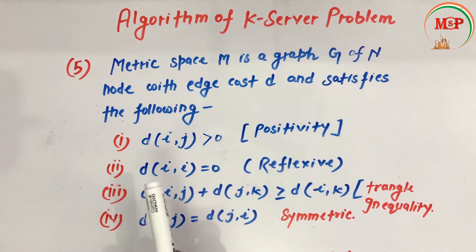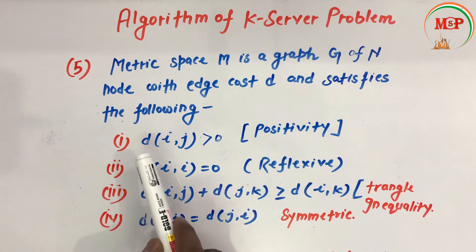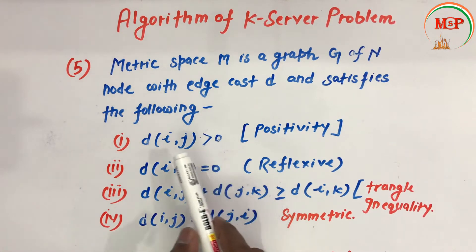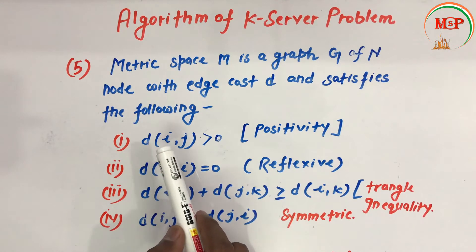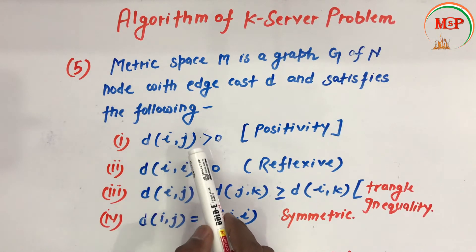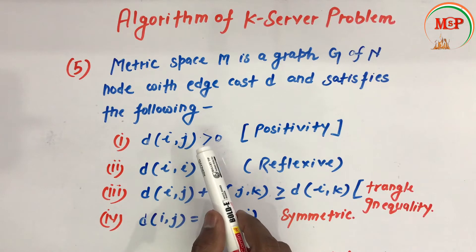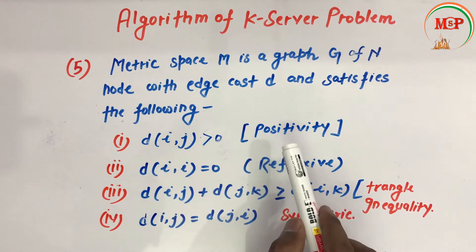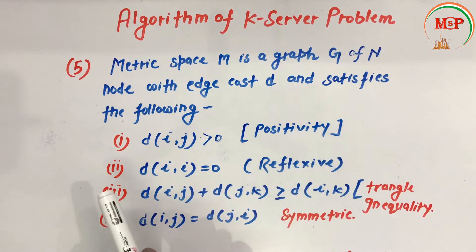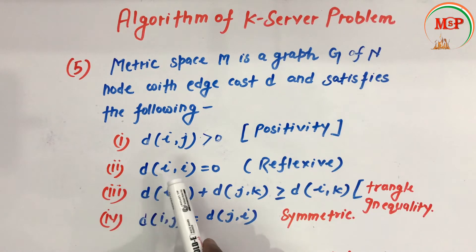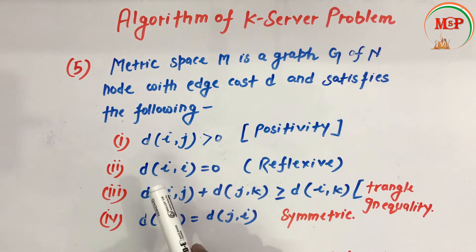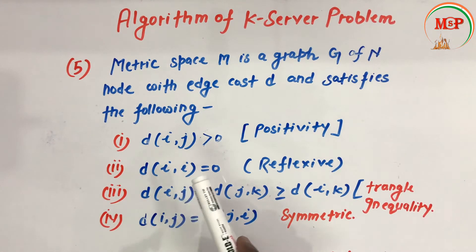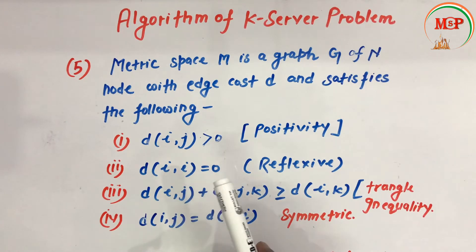The first condition is d(i, j) greater than zero — the distance from vertex i to vertex j must always be greater than zero; this is called positivity. The second condition is d(i, i) equals zero — the distance from node i to node i, that is the distance from a node to itself, is equal to zero.